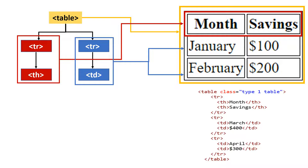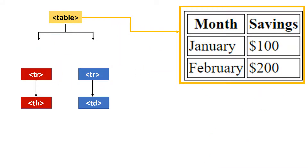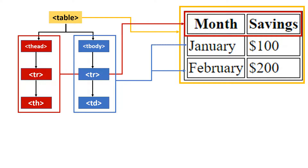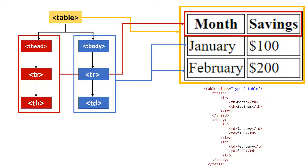The next structure is similar, except those two children become children of two additional children of the table tag. The first new child is thead, which contains the heading rows and represents the header portion of the table. The table tag also has another child called tbody, and whatever structure comes under it represents the remaining rows of the table.